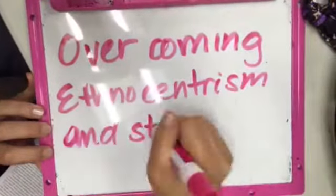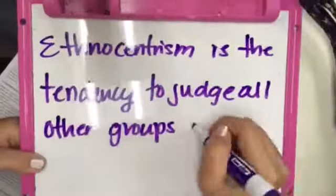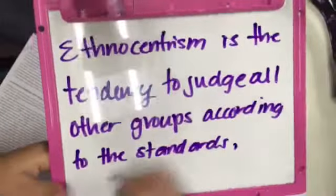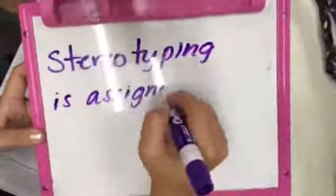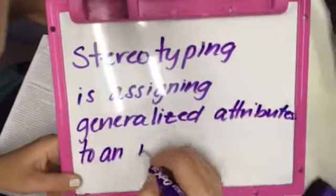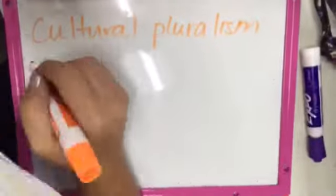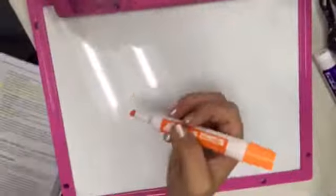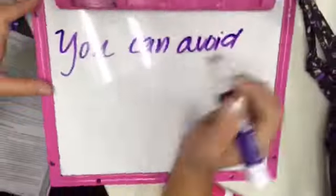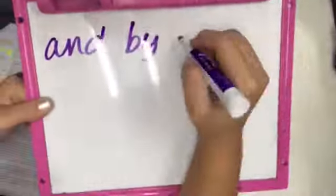Overcoming ethnocentrism and stereotyping: Ethnocentrism is the tendency to judge all other groups according to the standards, behaviors, and customs of one's own group. Stereotyping is assigning generalized attributes to an individual on the basis of membership in a particular group. Cultural pluralism is the practice of accepting multiple cultures on their own terms. You can avoid ethnocentrism and stereotyping by avoiding assumptions and judgments and by accepting differences.